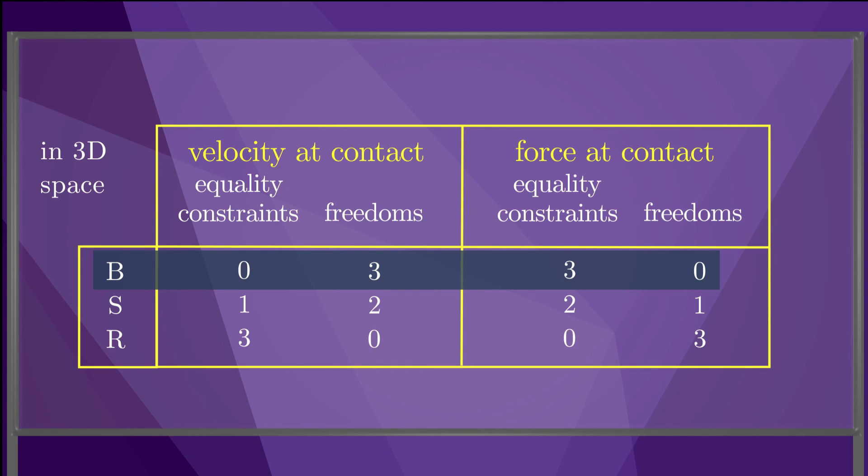Breaking contacts provide the fewest constraints on velocity and the most constraints on forces, while rolling contacts provide the most constraints on velocity and the fewest constraints on forces.